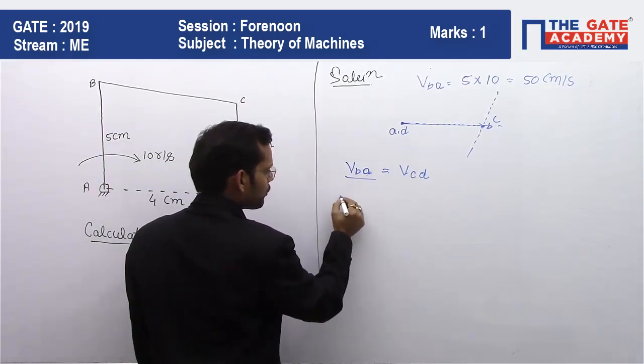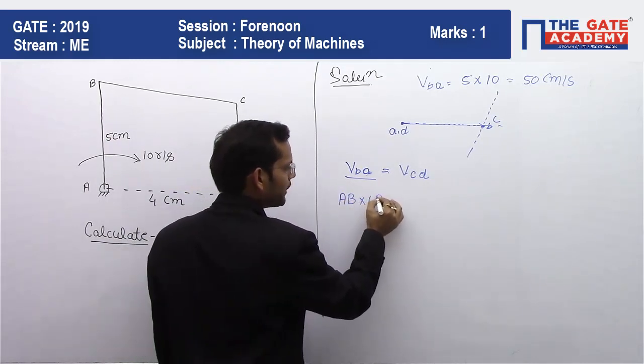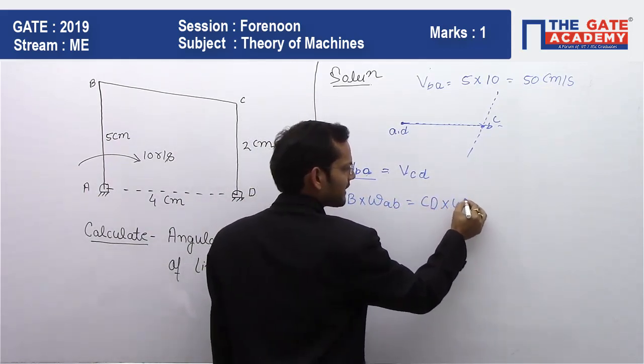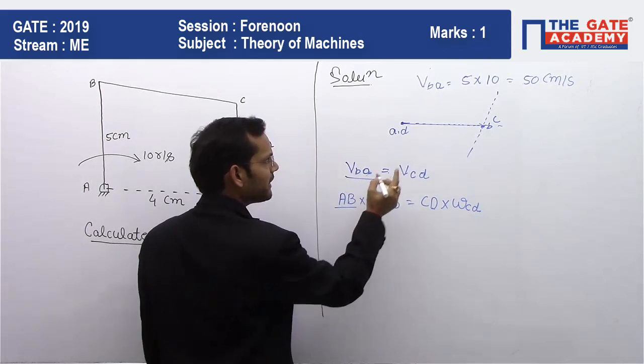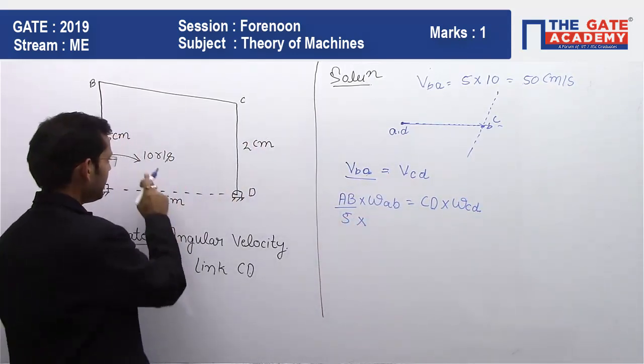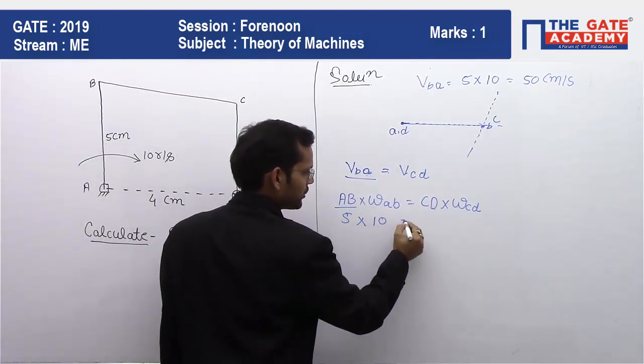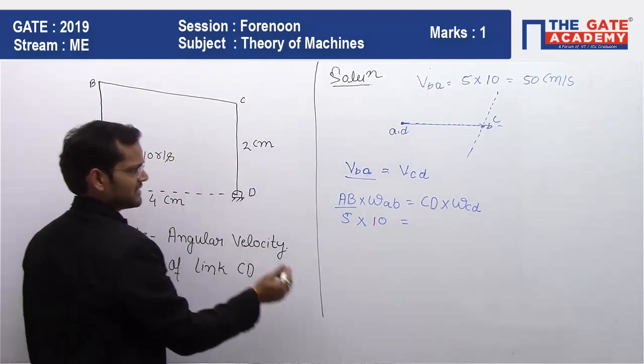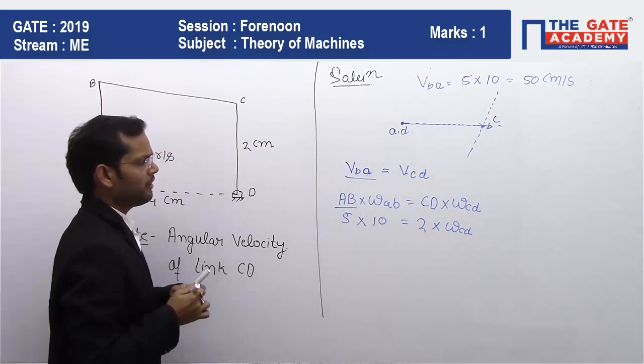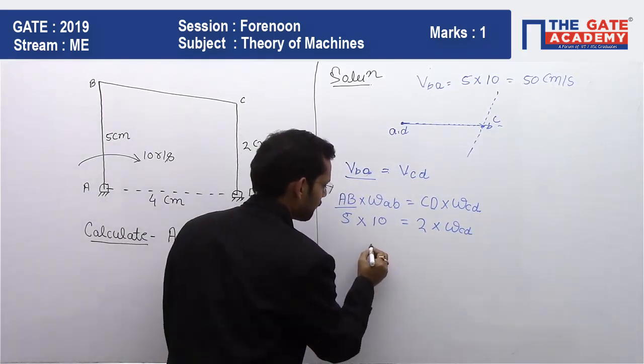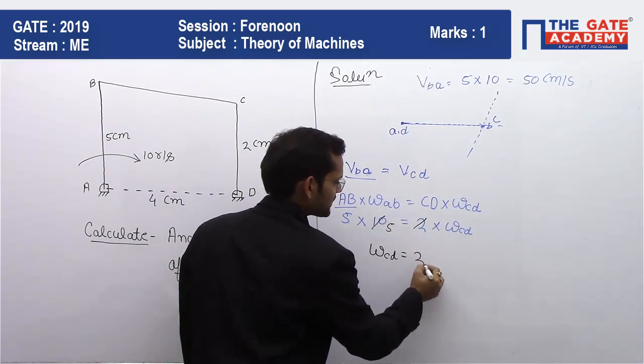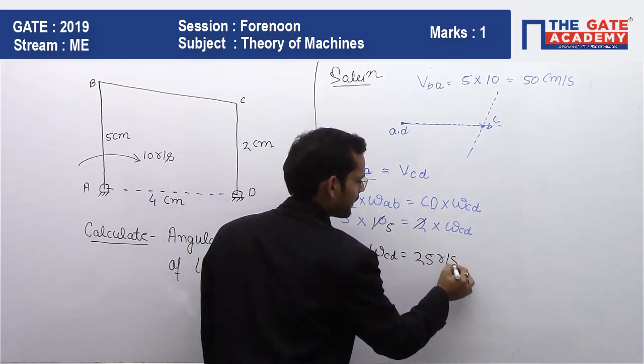VBA equals AB multiplied by ωAB, and VCD equals CD multiplied by ωCD. AB is given as 5 centimeters multiplied by ωAB, which is 10 radians per second, so it's 50. CD is equal to 2 times ωCD. From here we can get the value of angular velocity of link CD. This gives us 50 equals 2 times ωCD, so the answer is 25 radians per second.